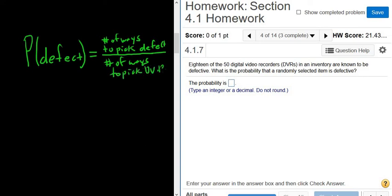When you're looking for something, in this case defect, it's the number of ways for that something to happen. So it's the number of ways to pick a defect, which is 18, because there's 18 defects, divided by the number of ways to pick a DVR, which is 50.